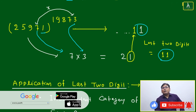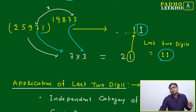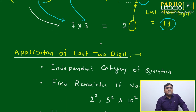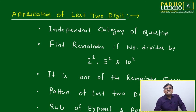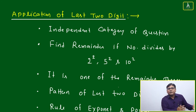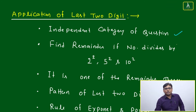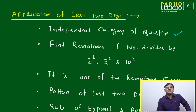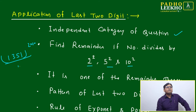Any number ending with 1 raised to any power — millions, billions, any number — you will be able to find the last two digits using this technique. Now let's see how this is useful. There are categories of problems. One is an independent question: given a large number raised to a large power, find the last two digits. Another category: find the remainder when divided by 2², 5², or 10².